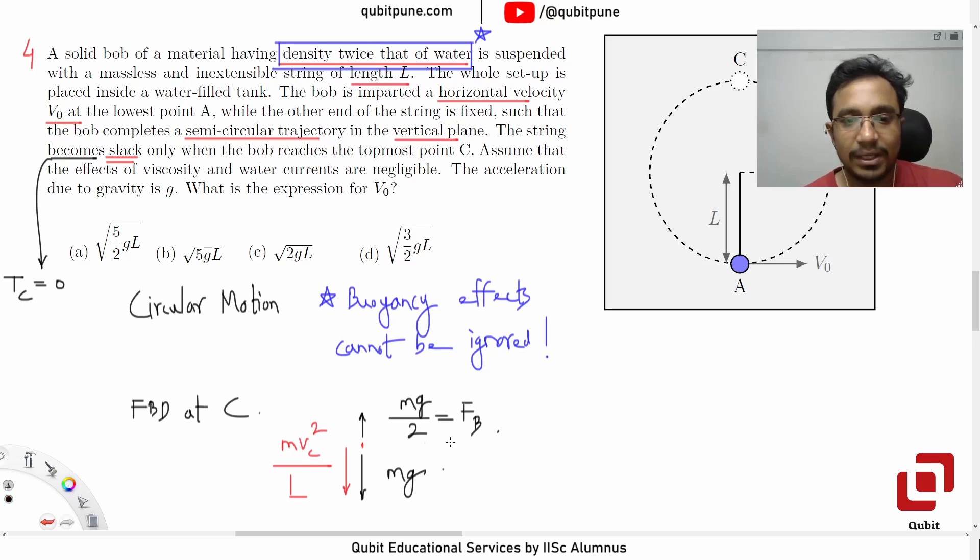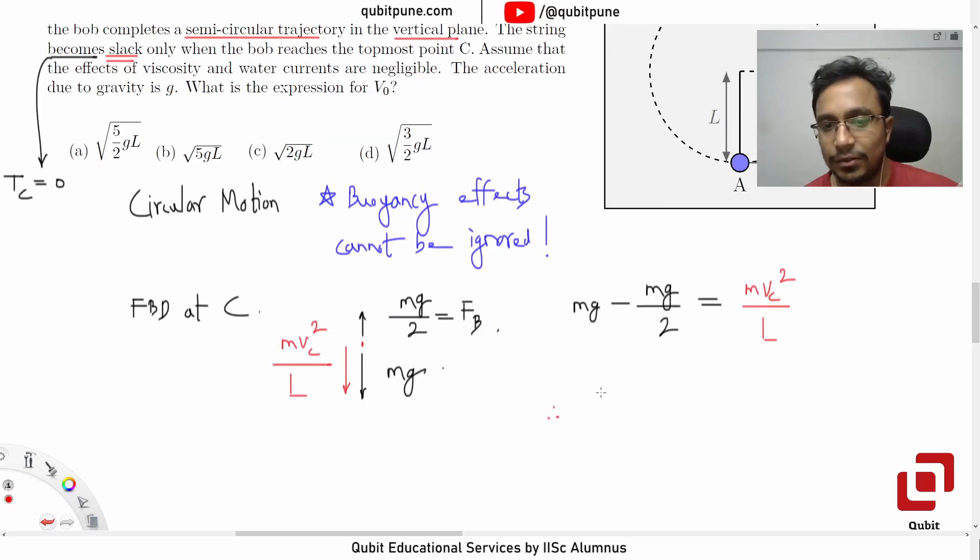So this will be MV_C squared by L. So MG by two is equal to MG minus MG by two equal to MV_C squared by L.